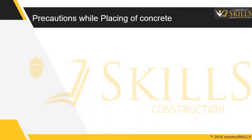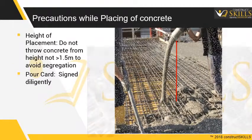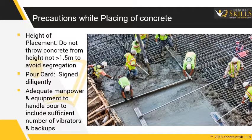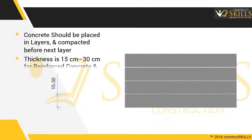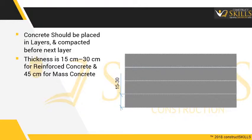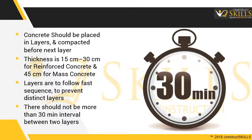Precautions while placing concrete: do not throw concrete from a height greater than 1.5 meters to avoid segregation. A pour card should be compiled diligently, and quality checklists for formwork and reinforcement should be completed. Ensure adequate manpower, equipment, and sufficient vibrators are available. Concrete should be placed in layers and compacted before the next layer is placed. Layer thickness should be 15 to 30 centimeters for reinforced concrete and 45 centimeters for mass concrete. There should not be more than 30 minutes pour interval between two layers, and no cold joints or distinct layer separation should occur.